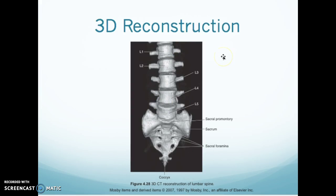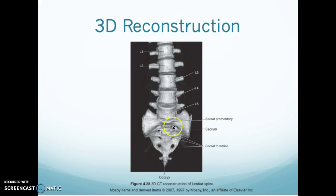This is a CT 3D reconstruction. L1, 2, 3, 4, and 5 — I usually count 5, 4, 3, 2, 1 from the bottom. If I can't tell if there's a transitional vertebral body, I will look for ribs as my stationary landmark. You can see the sacrum here and the sacral foramina, which are the openings where nerves come out.